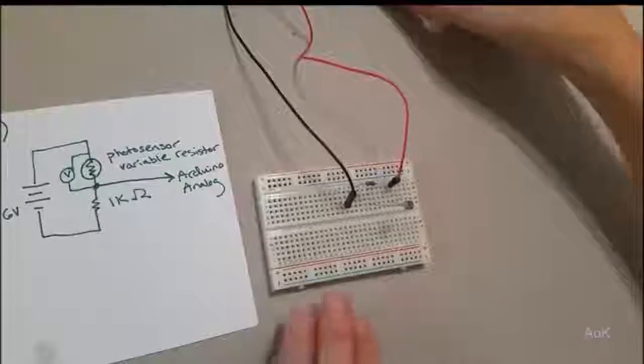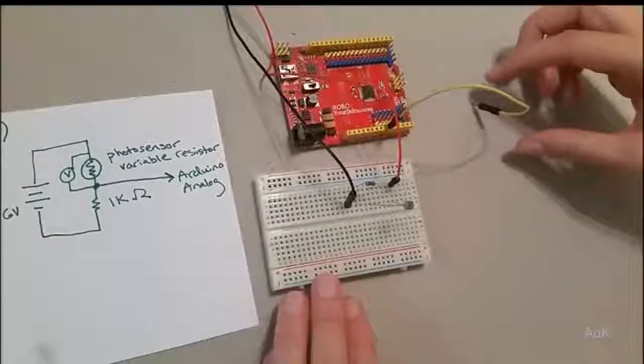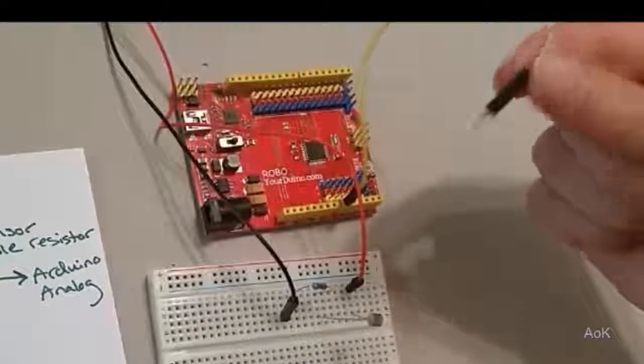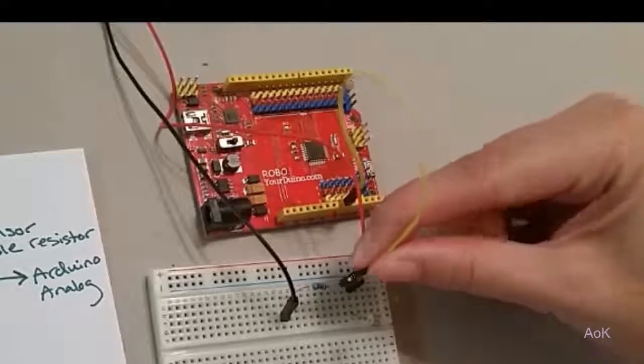The same information about voltage drop can be read by your Arduino board using the analog input signal. Simply place the wire between your sensor and your other resistor.